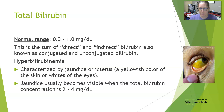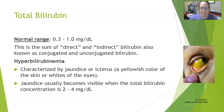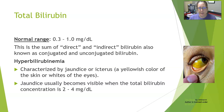Bilirubin has to be transported on albumin and taken to the liver, where it is conjugated by glucuronidation to make it into a water-soluble form that can be excreted in bile. Conjugated bilirubin is the bilirubin that has been made water soluble. Unconjugated bilirubin is lipid soluble and can cause damage if it accumulates in the brain.